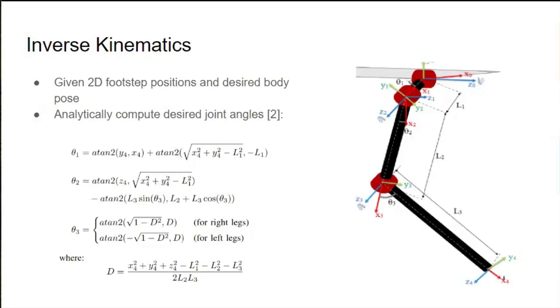Next, we compute the desired joint angles for each leg given the 2D footstep positions from GCS. This we do analytically, using a closed-form inverse kinematics solution.